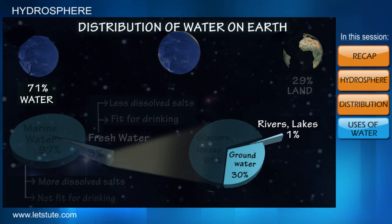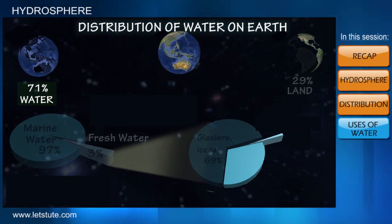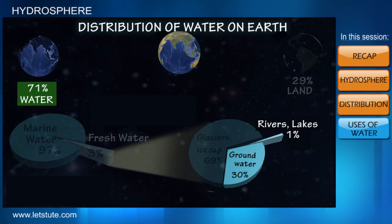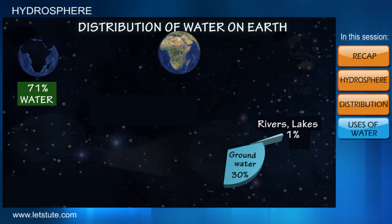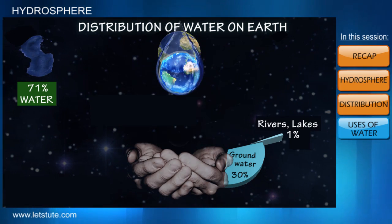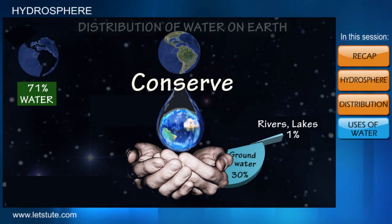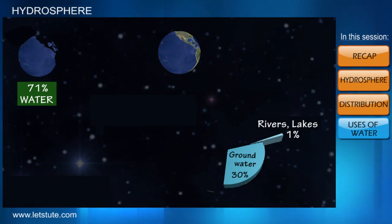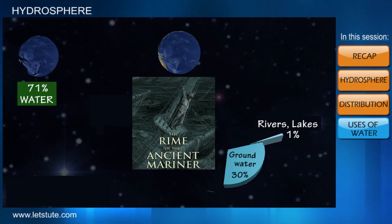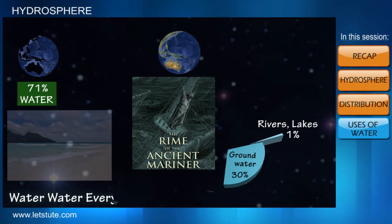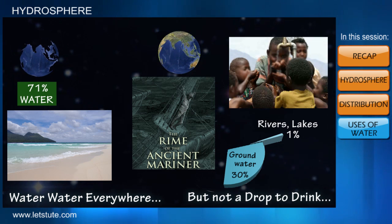We can compare this small portion of water which is available for drinking with the total water available on the Earth, and this is the reason why we must put efforts into conserving water. Here I remember the lines from the Rime of the Ancient Mariner: 'Water, water everywhere, but not a drop to drink.'